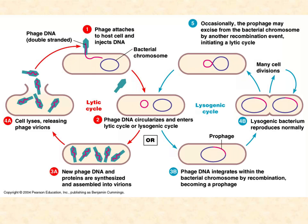Looking at the same lytic cycle but integrating the new options: remember, temperate or lysogenic phage have the choice to either lyse the host cell or lysogenize it. Starting at step one — attachment — specific adhesion happens and then DNA is injected. When phage DNA gets injected, it circularizes, just like a plasmid. If it's a lytic-only virulent phage, it automatically follows the red cycle where new phage DNA and proteins are synthesized, assembled into virions, the cell is lysed, and new phage particles are released to start the cycle again.